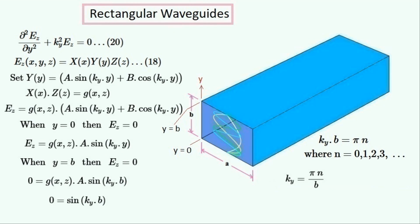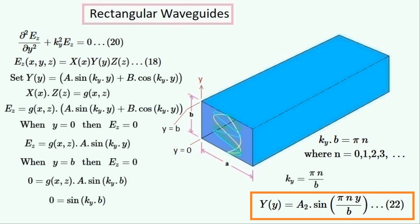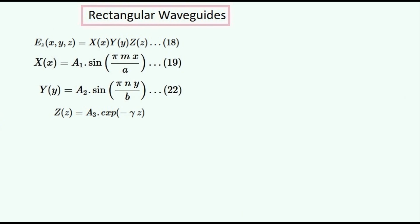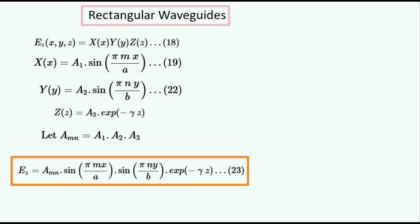KY can have an infinite number of values. This is the value of the function Y which contains the variable Y, and we're ready to plug all of these values in to find EZ. Now to put all of this together and calculate EZ. These are all the expressions X, Y and Z that we'll substitute in. After multiplying them together we get this expression for EZ as a product of these three expressions.